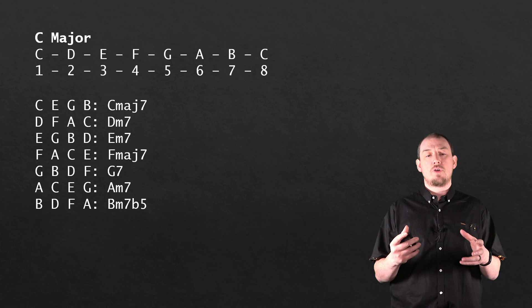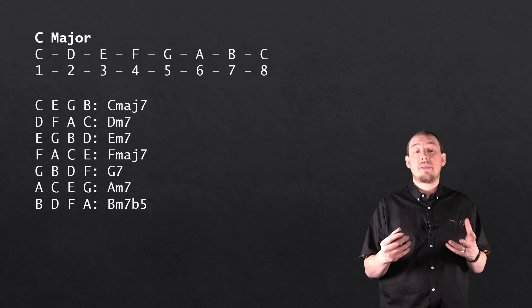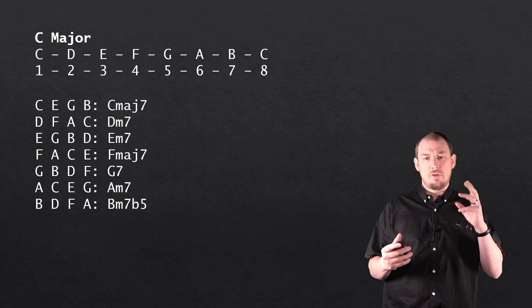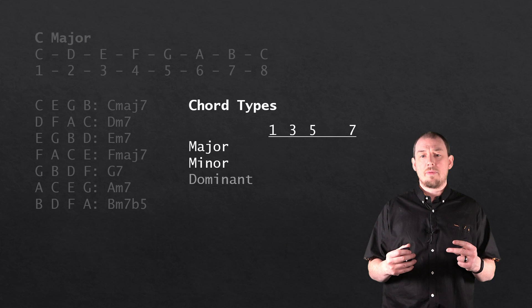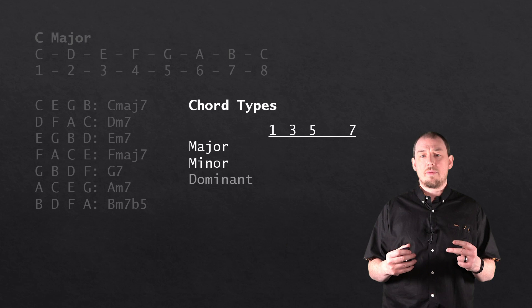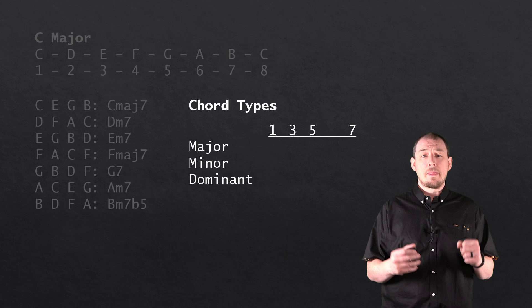All of these chords work really well together — any subset of them will sound harmonious because they're all in the same key. Now let's look at the three particular types of chord: we have a major chord, a minor chord, and a dominant chord. Dominant chords are often confused with major chords, and for a blues player the dominant chord is arguably the most important type of chord to understand.